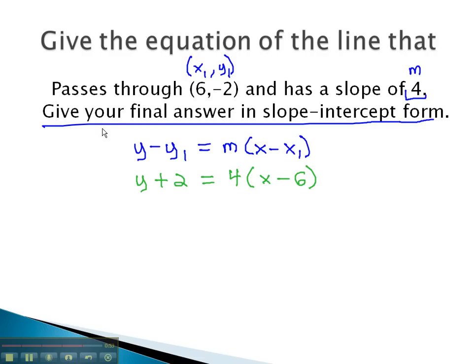However, the directions want us to give our final answer in slope-intercept form, which means we must ultimately solve this equation for y. We can do that by first distributing through the parentheses to clear those out of the way. y plus 2 equals 4x minus 24.